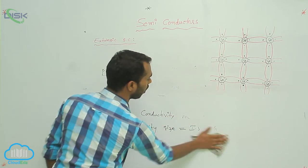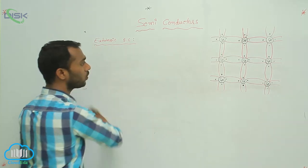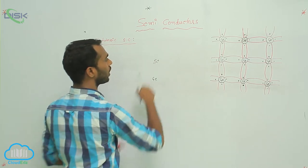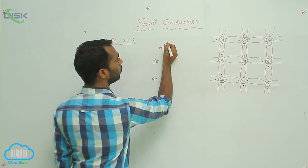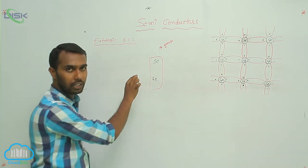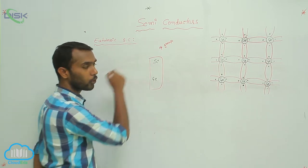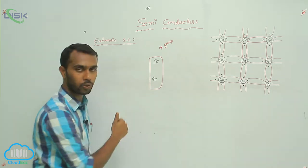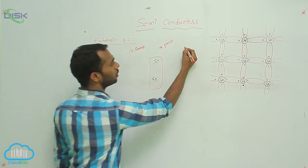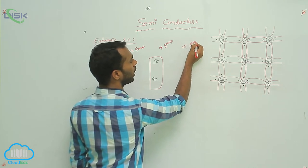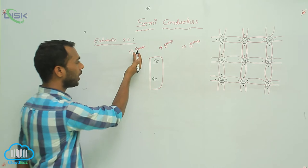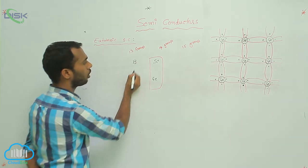Germanium and silicon exist in the 14th group of the periodic table. So the impurity atom size must be equal to silicon or germanium atom size. That's why we select elements from the 13th group and 15th group, because their atom sizes are nearly equal to 14th group elements.